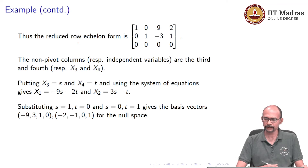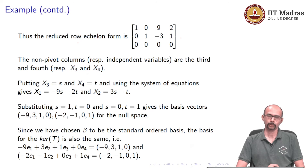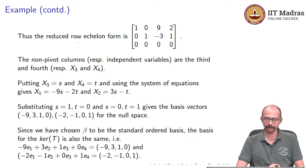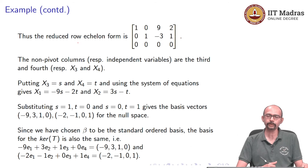Since we chose beta to be the standard ordered basis, the basis for the kernel of T is exactly the same as the null space basis. So the kernel basis is {(−9, 3, 1, 0), (−2, −1, 0, 1)}, since taking the linear combination of the corresponding standard basis vectors just gives back the same vectors.